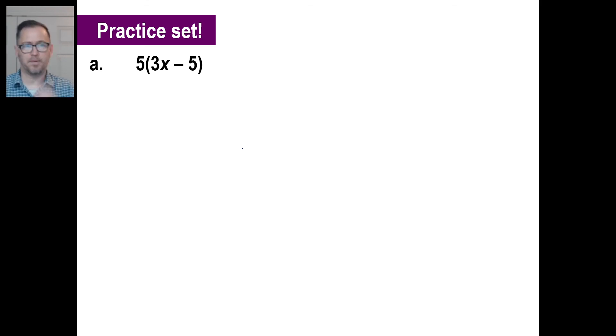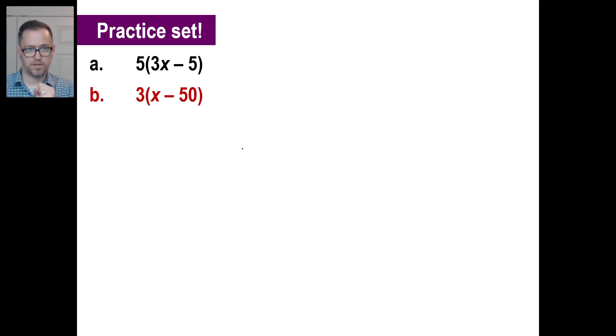Try B — pause it and give it a shot. B is 3 times the whole thing in parentheses: 3(X − 15).